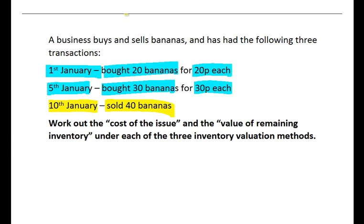Now what if when they sell those 40 bananas they walk into the storeroom and all they see is 50 bananas and they can't remember which ones were bought on the 1st of January, which ones were bought on the 5th of January—they're all jumbled up in a big pile in the storeroom. So to make the sale they just grab 40 of those bananas without knowing or perhaps caring which ones originally cost 20p and which ones originally cost 30p. You can imagine they may not keep track of each individual banana.